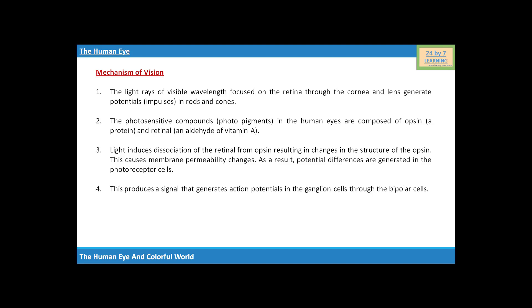This produces a signal that generates action potentials in the ganglion cells through the bipolar cells. These action potentials are transmitted by the optic nerves to the visual cortex area of the brain, where the neural impulses are analyzed and the image formed on the retina is recognized based on earlier memory and experience.